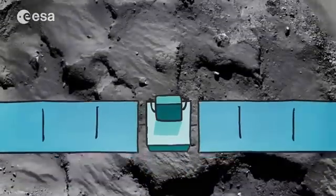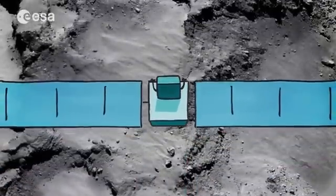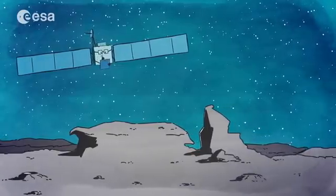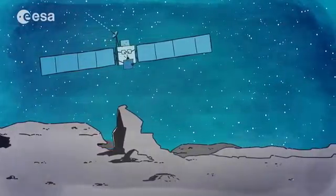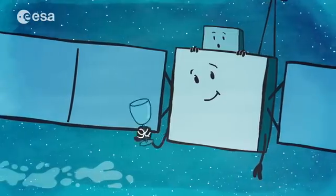There were craters, cliffs, and boulders the size of houses. Rosetta spent many weeks studying the surface of the comet, sending lots of information back to Earth.